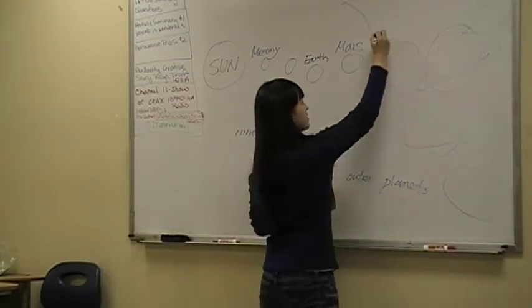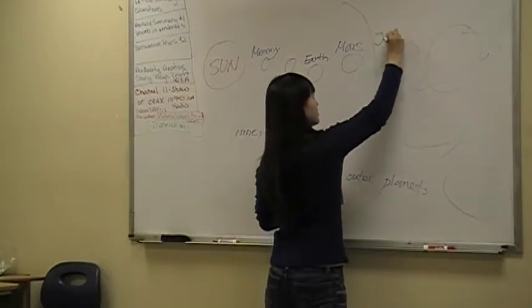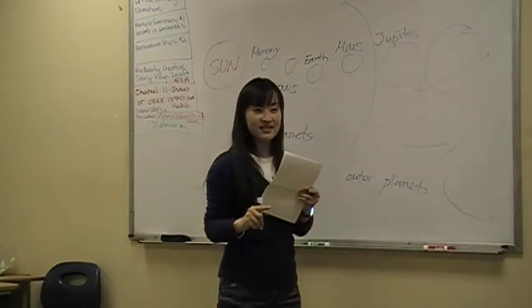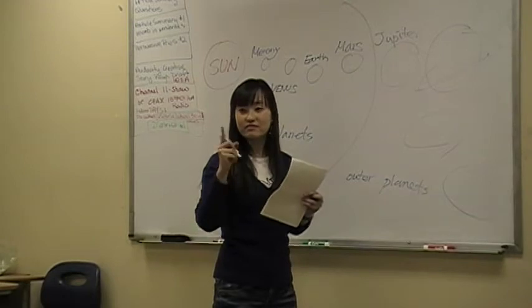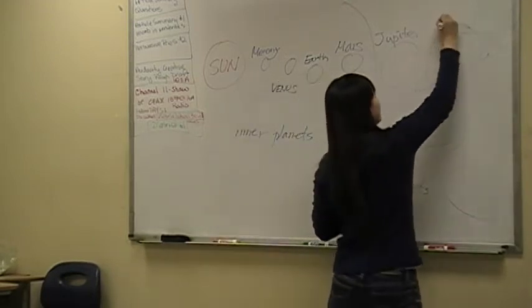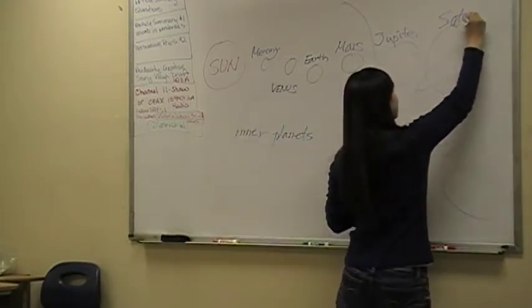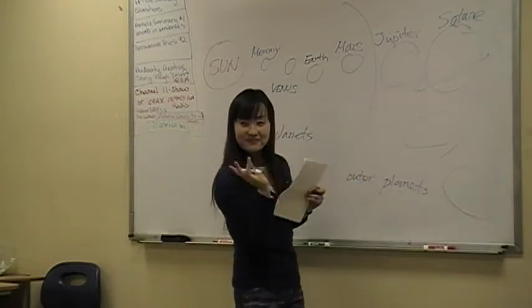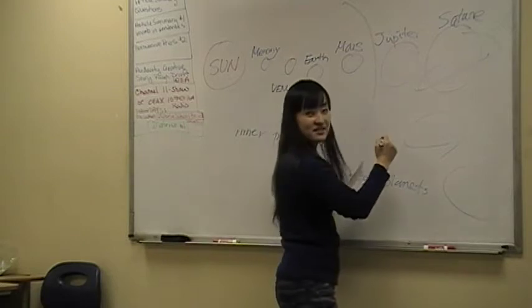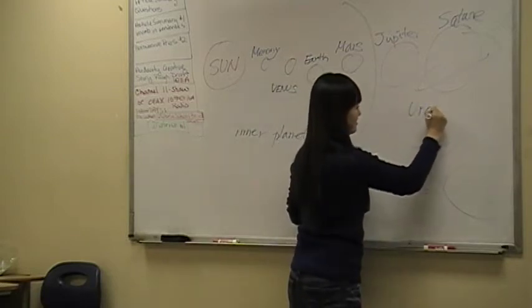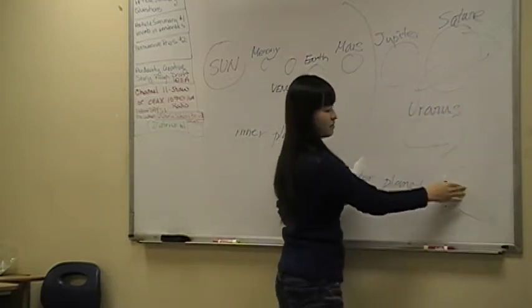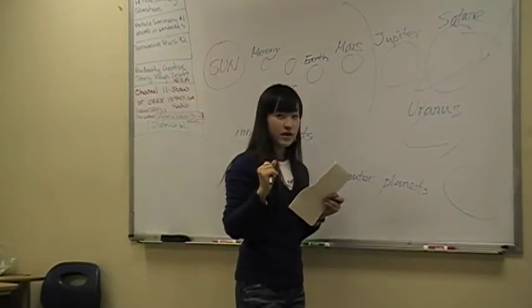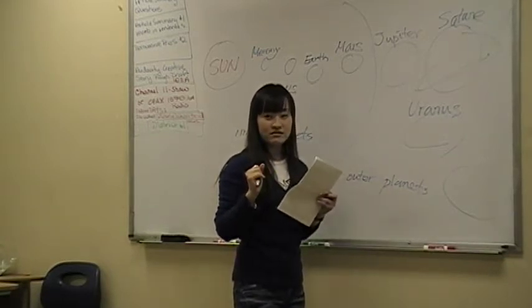And then this is Jupiter. What about this? Saturn. Saturn. Correct. Saturn. And next? This is Uranus. Yeah. And the last one? Pluto. Neptune.